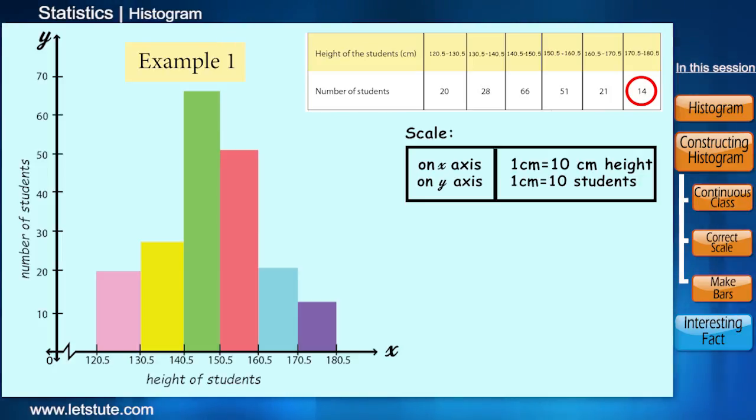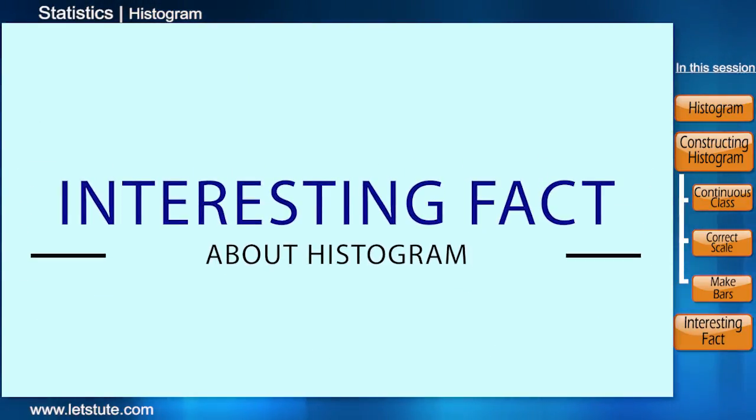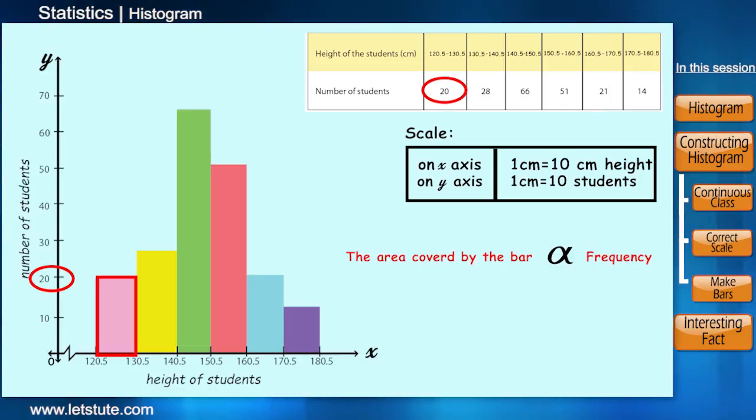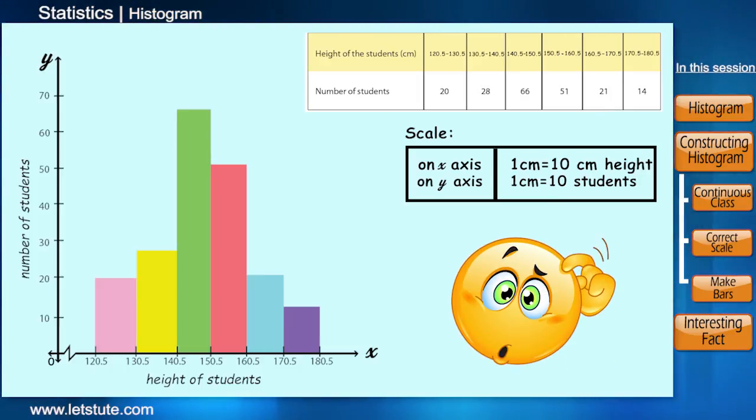And in this way the graph so obtained is called a histogram which is a graphical representation of a grouped frequency distribution with continuous class. Now let's learn one more interesting fact about histogram. Here the area covered by the rectangular bars is directly proportional to the frequency. Now in this case you may say that how does it have any impact whether the area corresponds to the frequencies or not?